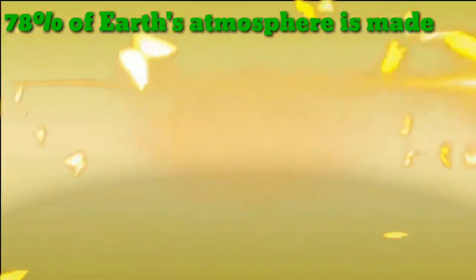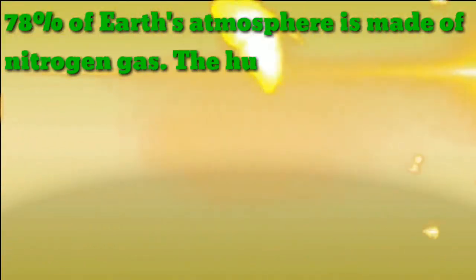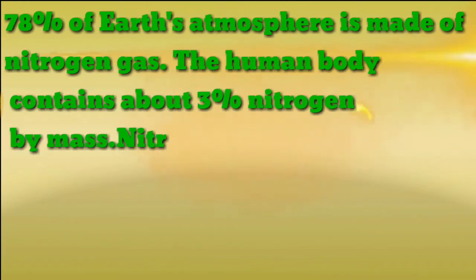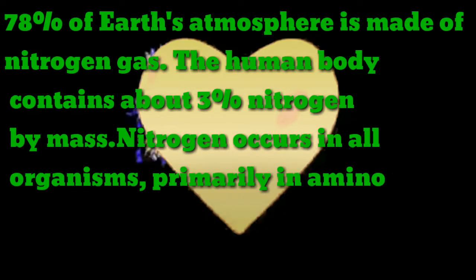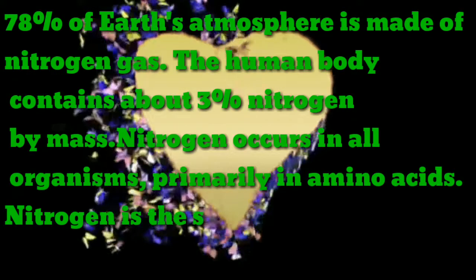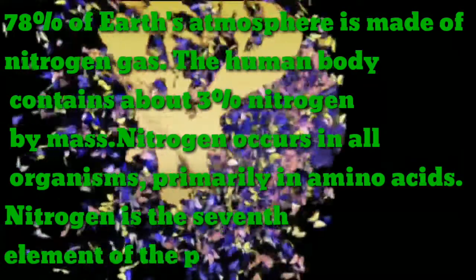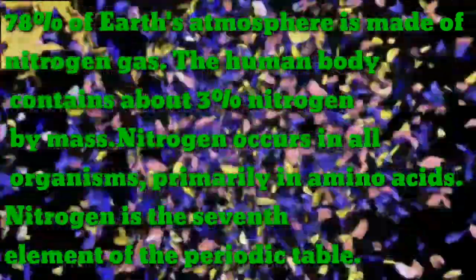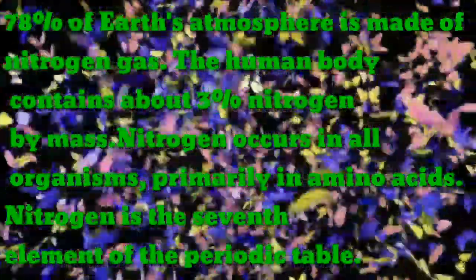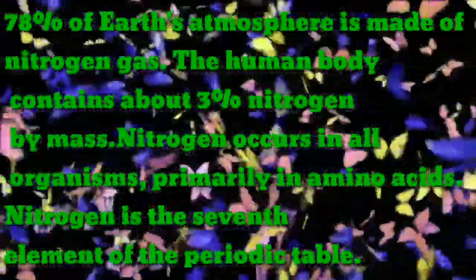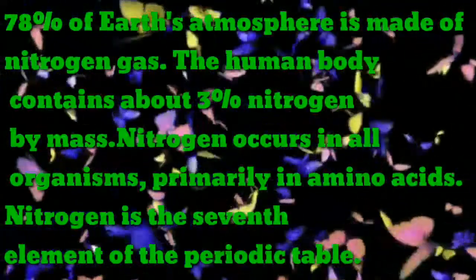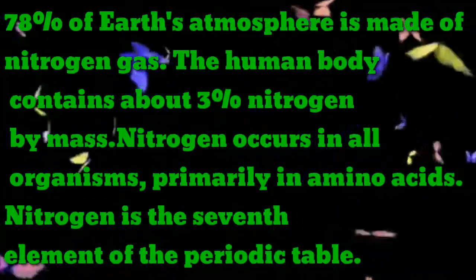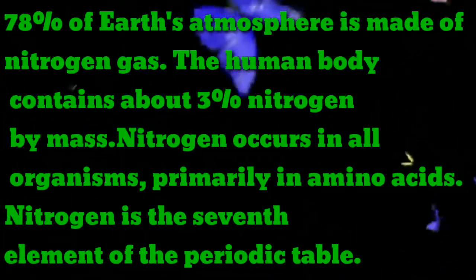78% of Earth's atmosphere is made of nitrogen gas. The human body contains about 3% nitrogen by mass. Nitrogen occurs in all organisms, primarily in amino acids. Nitrogen is the seventh element of the periodic table.